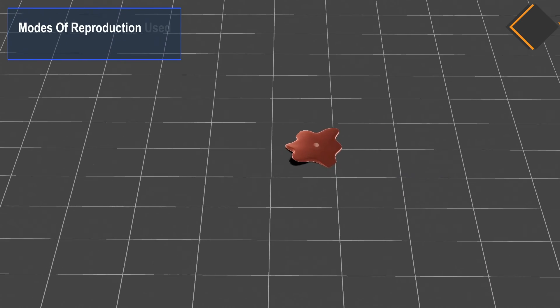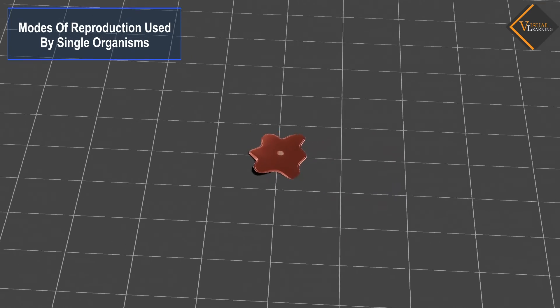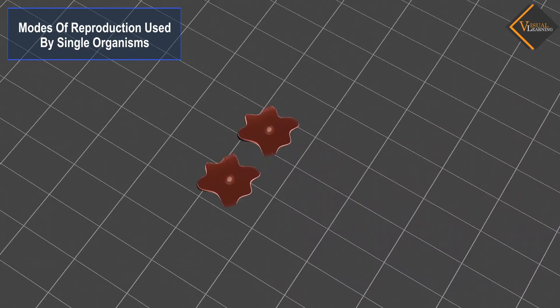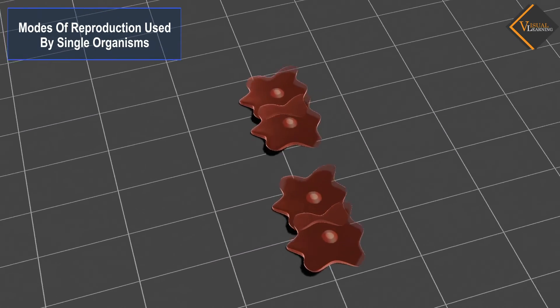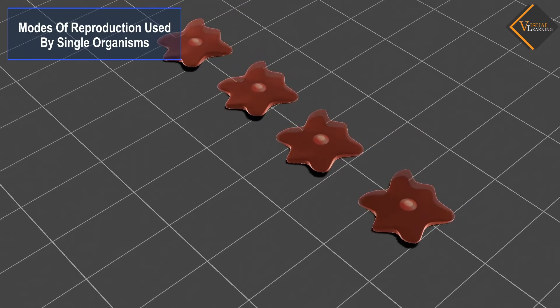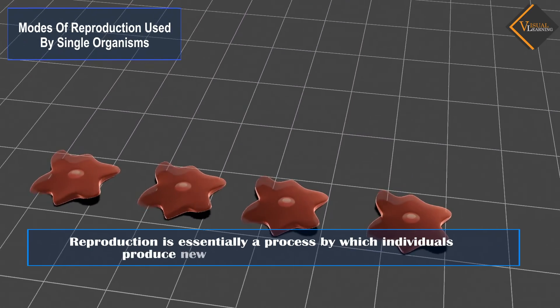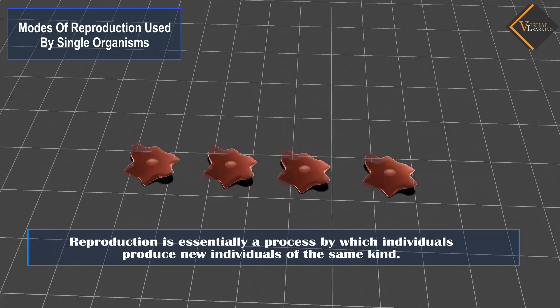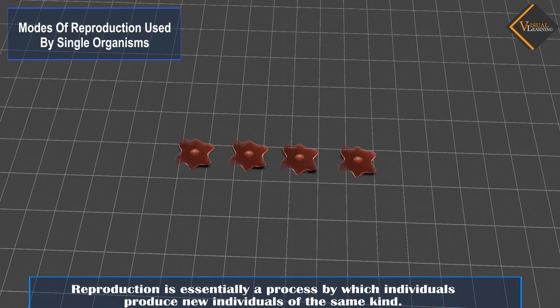Modes of reproduction used by single organisms. Organisms reproduce to continue the chain of life, to pass on genes which are acquired over very long time. Reproduction is an essential process by which individuals produce new individuals of the same kind. This process is very important for the existence of life on earth.